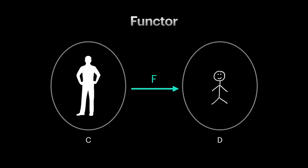Something that is obvious is we want this mapping to preserve the structure from the first category. We want to recognize a human from a drawing of a human. And that is the most important part about functors. They preserve structure.